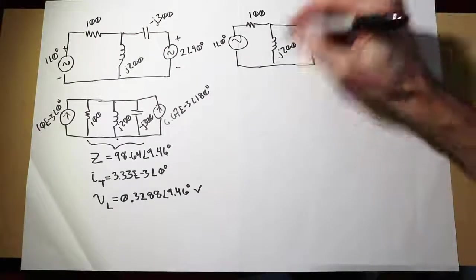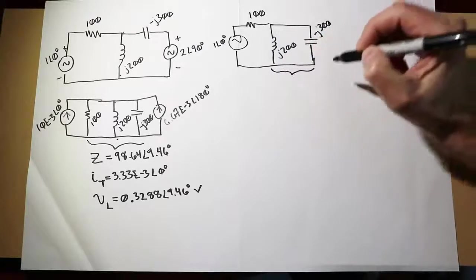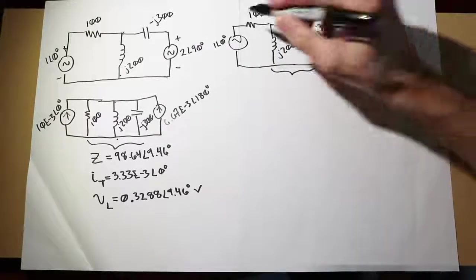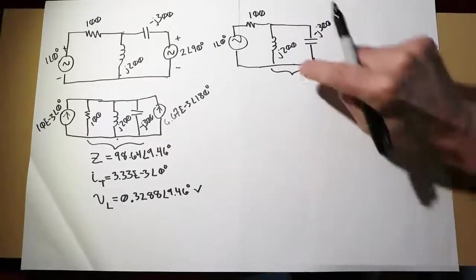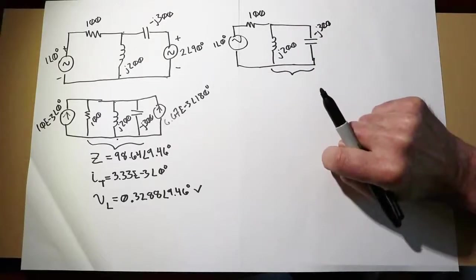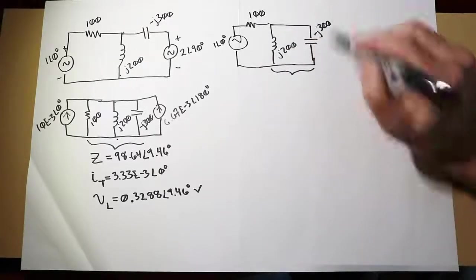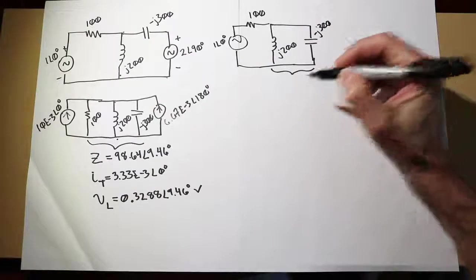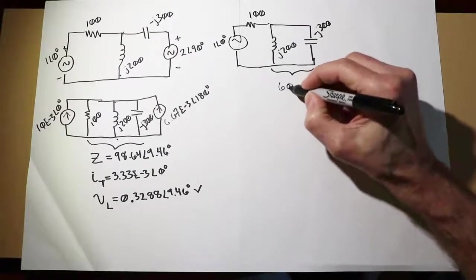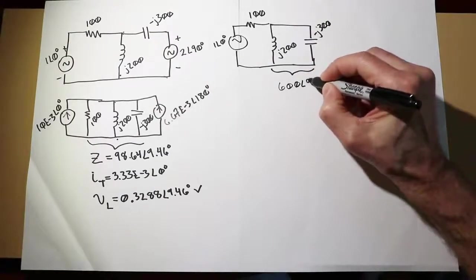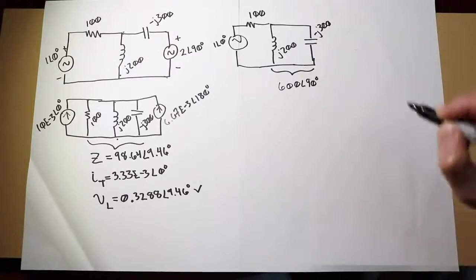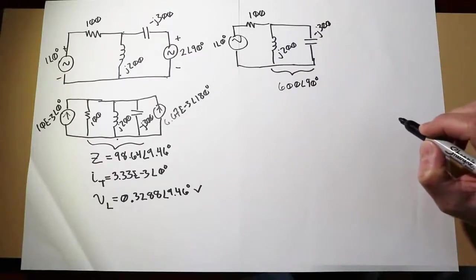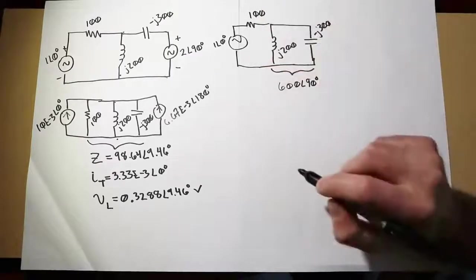I've got a minus J300 there. To find the voltage across the inductor, all we really have to do is find out what this impedance is, and then do a voltage divider. This impedance, we could use the product sum rule, J200 in parallel with minus J300, and that'll give us 600 at an angle of 90 degrees, or if you prefer, J600.